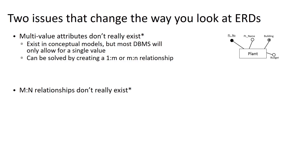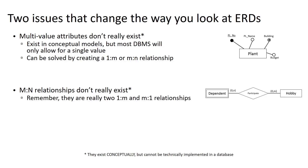The second thing is our many-to-many relationships don't really exist either. It is a thing that we can model, but we can't capture a many-to-many relationship in our database. What we have to do is decompose that many-to-many relationship down into two one-to-many relationships, and we're going to see how we do that in this lecture.